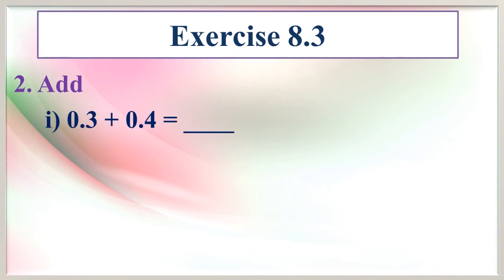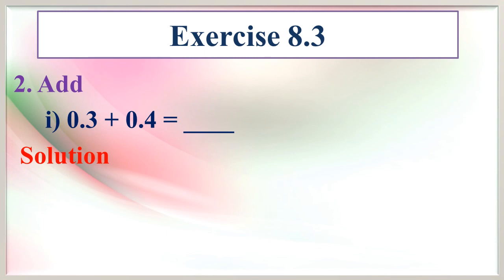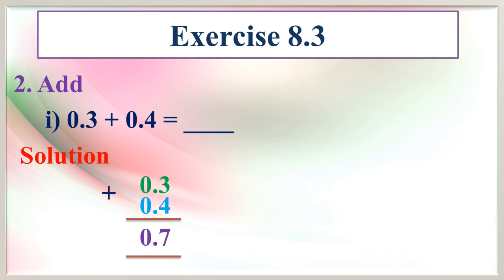Add 0.3 plus 0.4 equals dash. Now we are going to write the given decimals in vertical position: 0.3 plus 0.4. Now we are going to add. The first digits: 3 plus 4 equals 7. Then write 0. So the answer is 0.7.